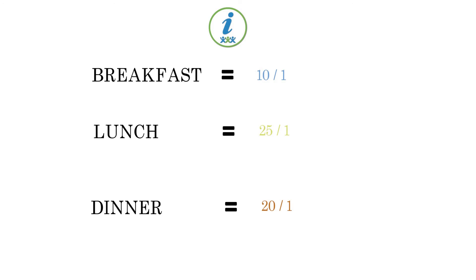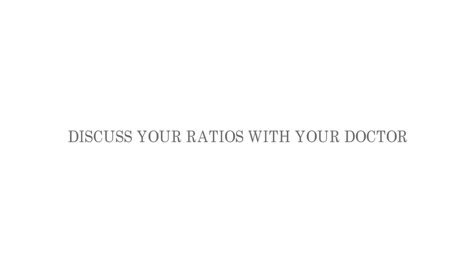Depending on how you react to foods at certain times of the day, you could have multiple ratios for different meals. For example, you could have a carb ratio of 10 for breakfast, 25 for lunch, and 20 for dinner. It is imperative that you discuss these ratios with your doctor.